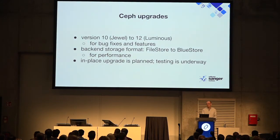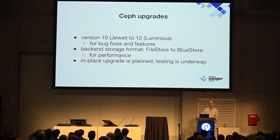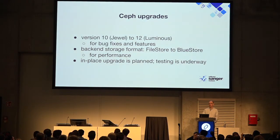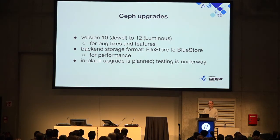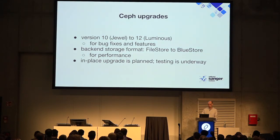The Ceph upgrade will take us from Jewel to Luminous — bug fixes and features — and will make it capable of stable CephFS in the future. For the backend storage format we're going from Filestore to Bluestore — XFS file system-based to the binary database on disk. That should give us a really good performance uplift. At Ceph Day on Monday, Stig Telfer was saying two times, four times, maybe six times improvement by going to Bluestore, and we can certainly use some of that. We'll do an in-place upgrade — tests are underway and we're quite confident.